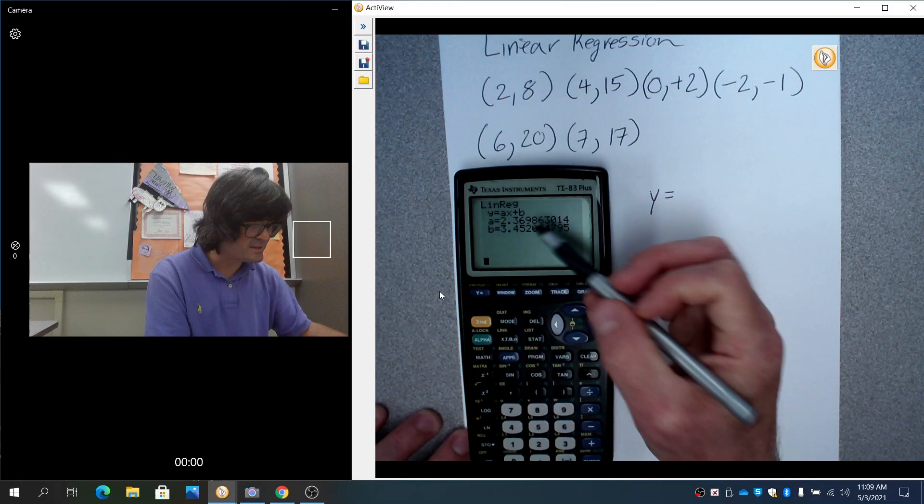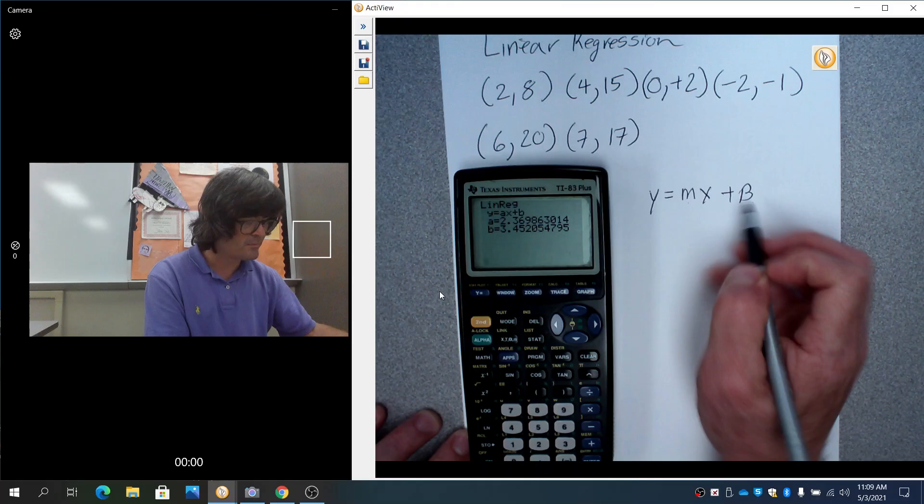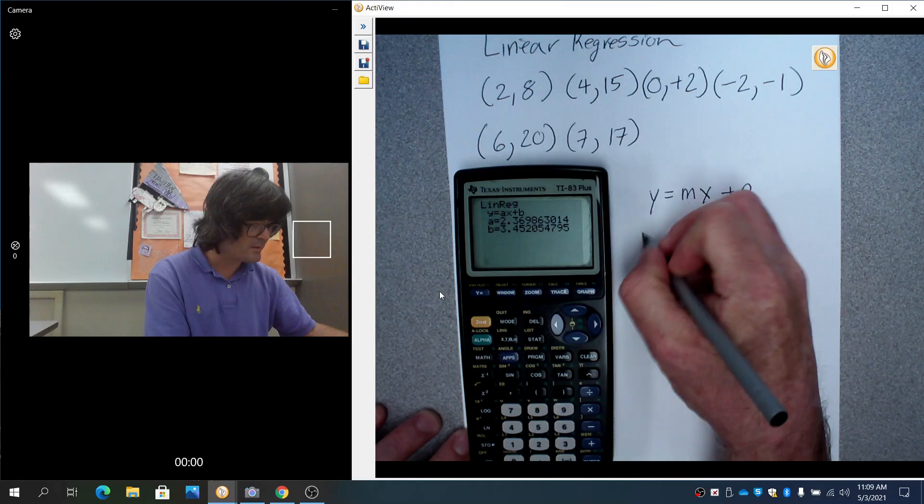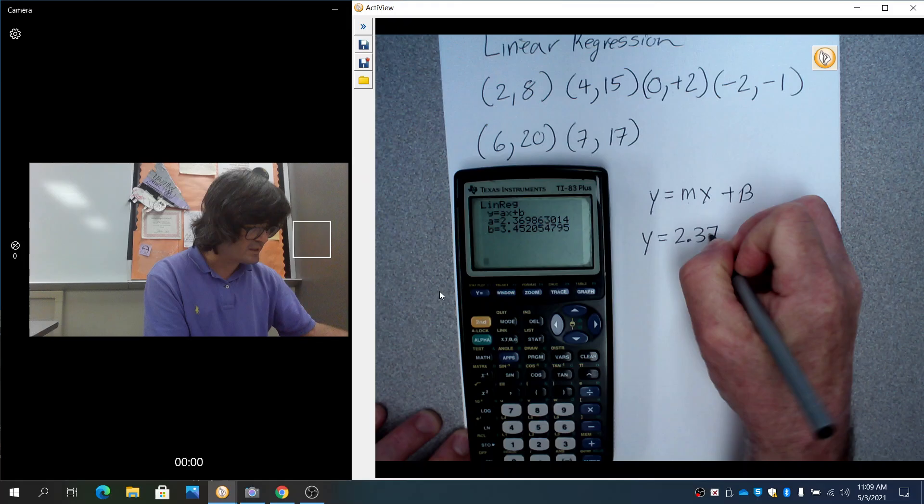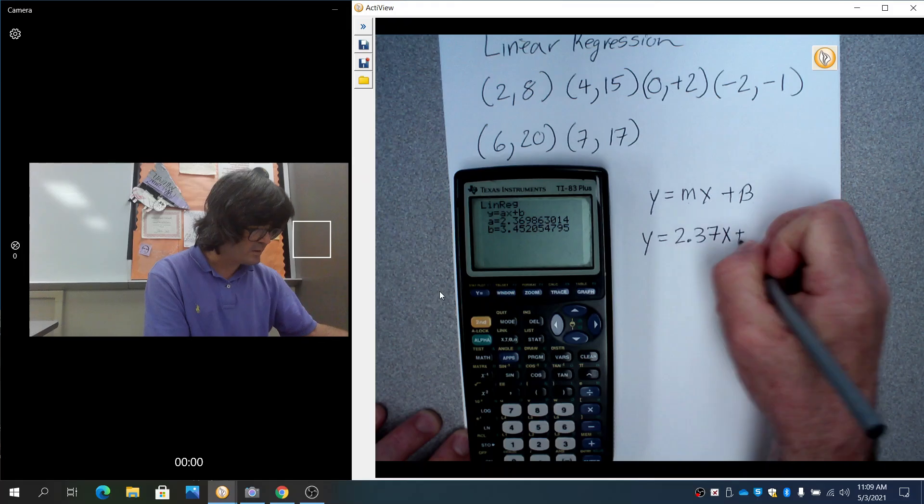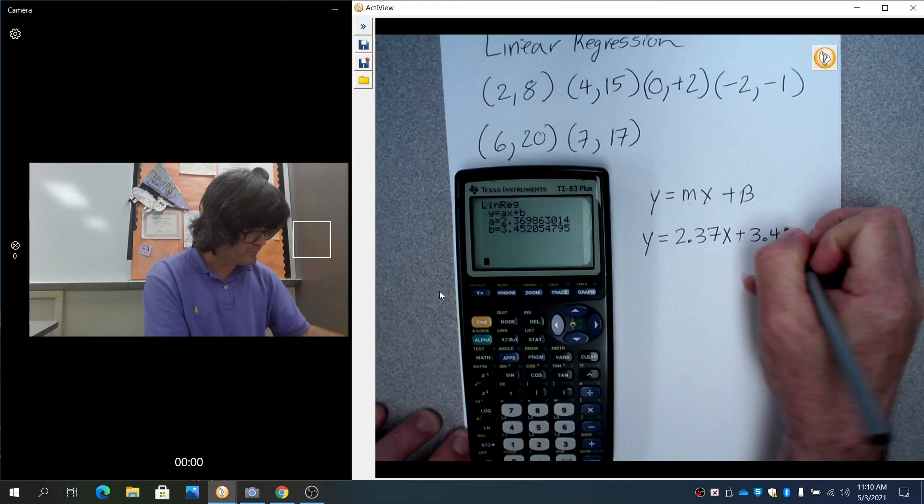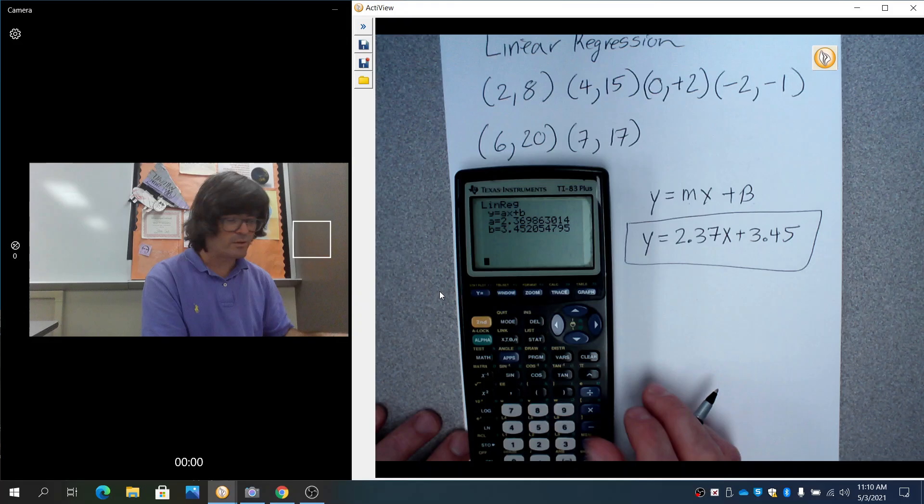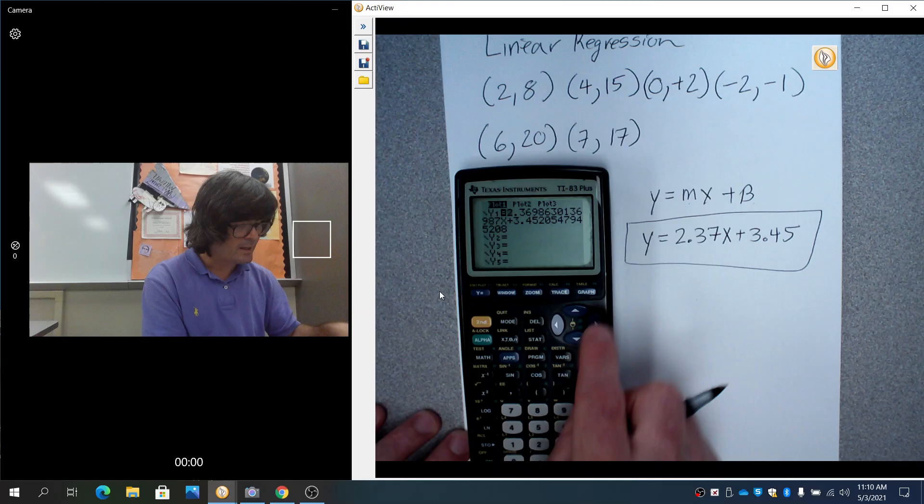So there it is. My linear regression is y equals a - that's like the slope, you know, for a linear model you have y equals mx plus b where this is the slope, this is the y-intercept. So for me this is 2.37x plus 3.45. And there we go.